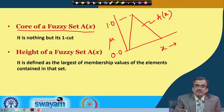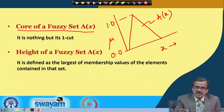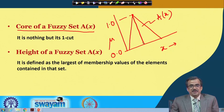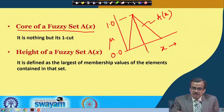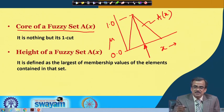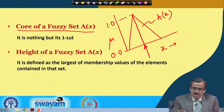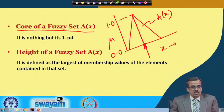The one-cut means mu should be greater than or equal to 1, but it cannot be more than 1, so it is exactly equal to 1. Corresponding to mu equals to 1.0, I can find out the corresponding value of x. This is the value of x for which mu becomes equal to 1.0, and this indicates the core of a fuzzy set. So the core of a fuzzy set is nothing but its one-cut.